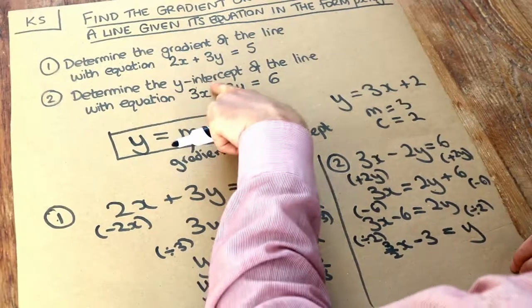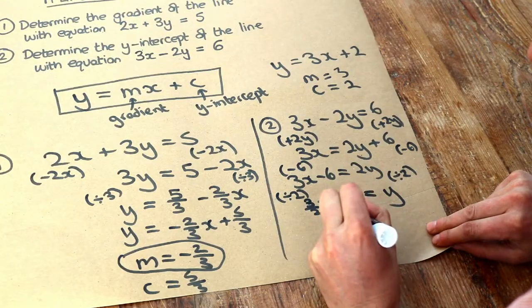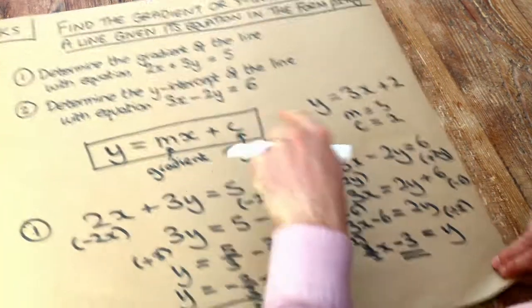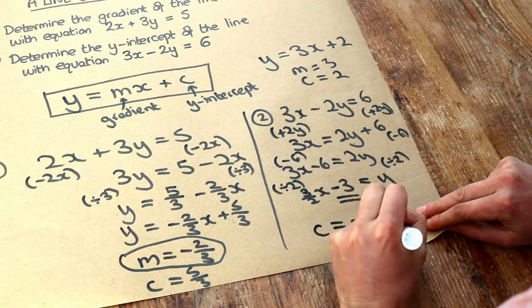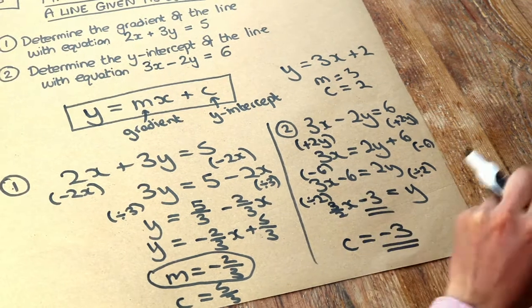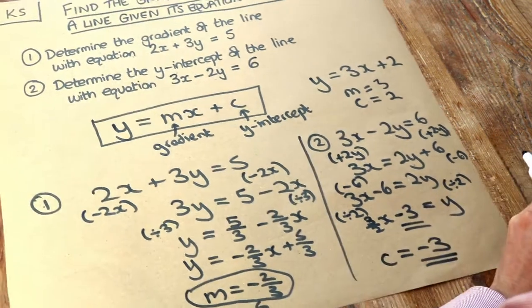And we want the y-intercept. Now the y-intercept is the constant term, the plus thing or the minus thing. So the y-intercept is minus 3, and the gradient, if it asks for it, would be 3 over 2, because that's the number in front of x. And we're done.